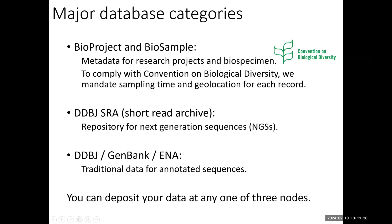The next major database is SRA, Sequence Read Archive. SRA was initially named Short Read Archive because next-generation sequencing began with short read sequences like Illumina. But now there are many long read sequences, so the repository name SRA currently stands for Sequence Read Archive. Sequence reads from NGS sequencers are recorded together with quality values, and for each sequence record its associated BioSample and BioProject information are recorded.